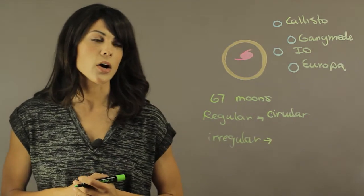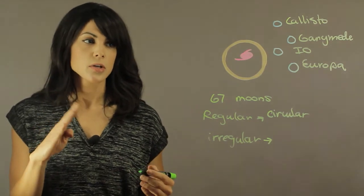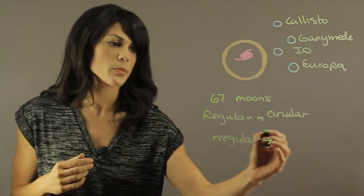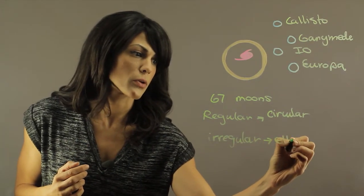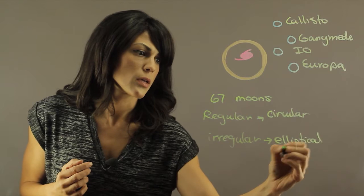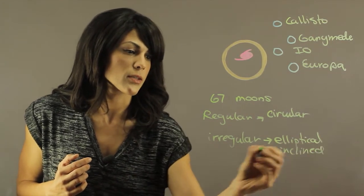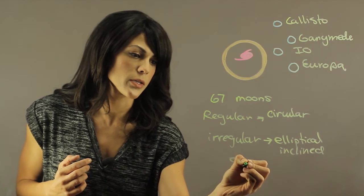And then the irregular satellites are the ones with high inclinations. So these ones have very inclined orbits and they have elliptical orbits. An example of this is actually Themisto, which is a pretty cool moon.